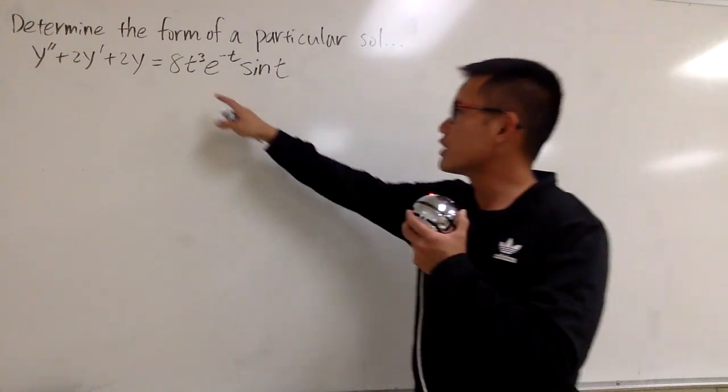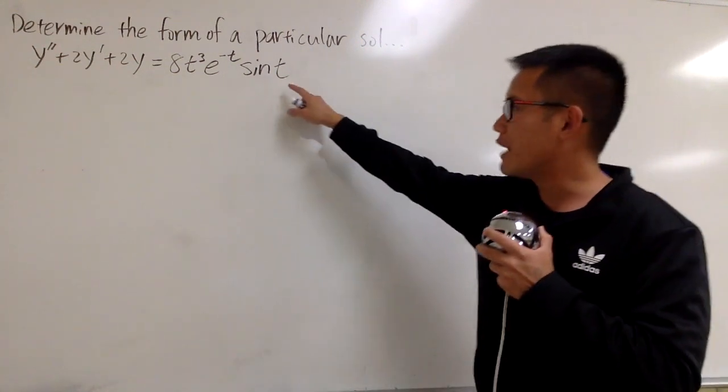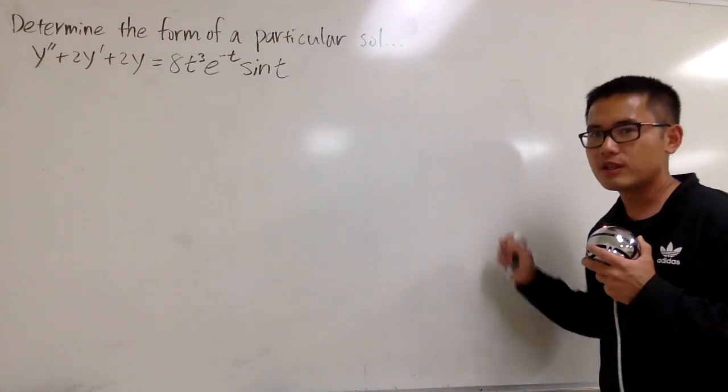I'm just going to look at the right-hand side first. You see that this is the product of a polynomial, e to something, and also sine. And because we have the sine t right here, be sure you have both sine and cosine.